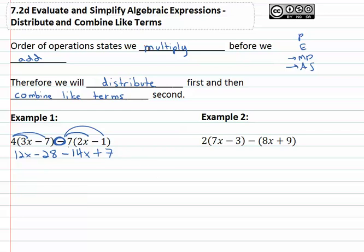However, we can keep simplifying because we have some like terms. 12x minus 14x is negative 2x, and we also have the like terms of the numbers, negative 28 plus 7 is negative 21. So our simplified final answer is negative 2x minus 21.